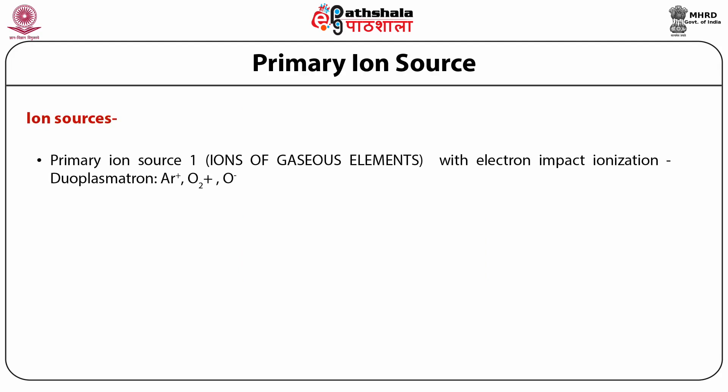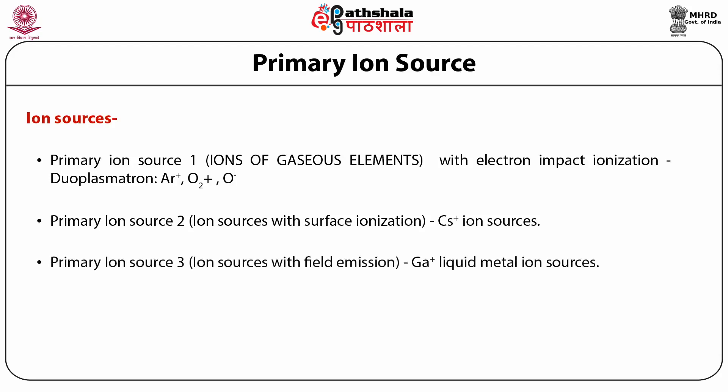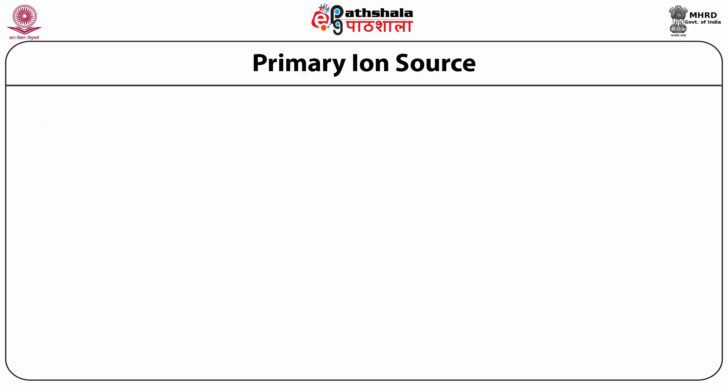The Primary Ion Source consists of ions of gaseous elements with electron impact ionization, known as the Dual Plasmatron. These produce Argon+, Oxygen+, and Oxygen− (O−). Primary Ion Source 2 uses ion sources with surface ionization, producing Caesium+ ions. Primary Ion Source 3 uses ion sources with field emission, producing Gallium+, called Liquid Metal Ion Sources.